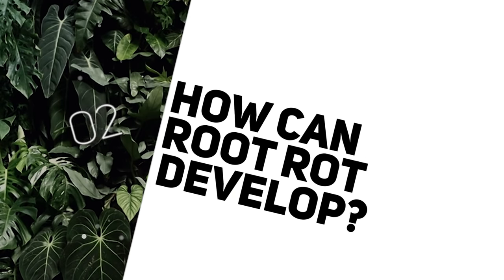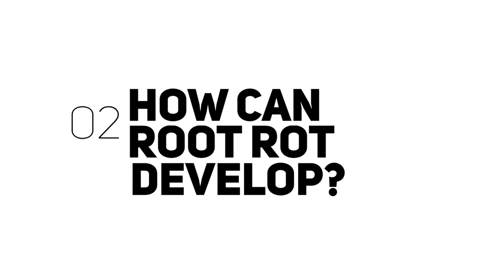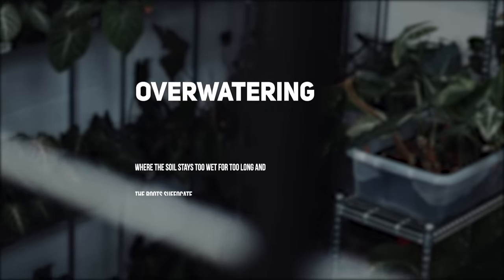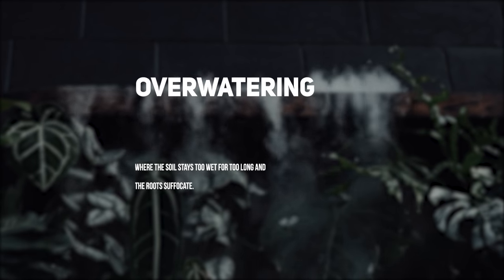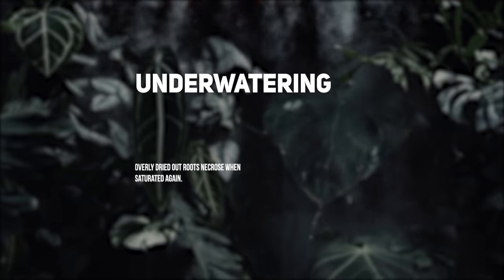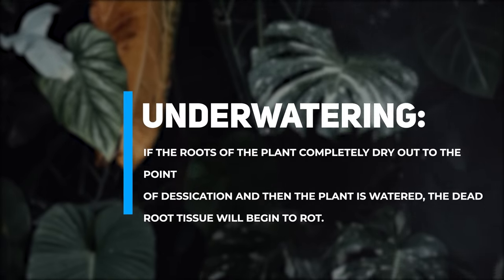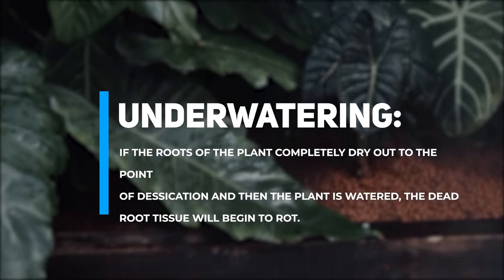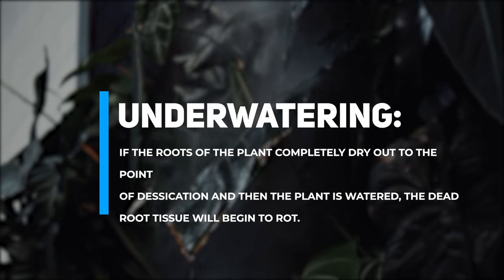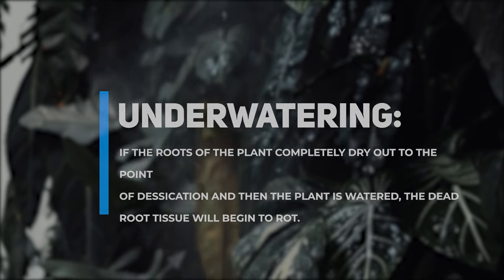So what specifically causes root rot? Because if we can identify the cause, we may be able to also identify ways of preventing it in the future. There are a few ways that root rot can actually occur. The most common method is the overwatering of a house plant, where the soil stays too wet for too long and essentially root rot develops. But did you know that root rot can occur from severely underwatering a plant? If a plant's roots completely die out from underwatering to the point of desiccation and then we water the plant again, those roots will rot and there is a chance of the rot persisting throughout the stem of the plant. So if we underwater the plant completely and then saturate those roots, you are creating a really nice mushy environment for those dead roots to just rot away — and they're still attached to the plant, which makes it really dangerous. And that is how root rot can spread.